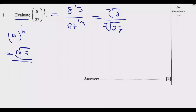The cube root means: which number can you multiply by itself 3 times to get 8? We know that 2 × 2 = 4, and 4 × 2 = 8. So that number is 2 — multiply 2 by itself 3 times and you get 8.